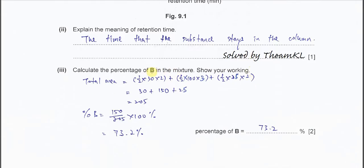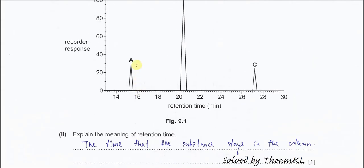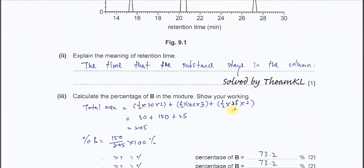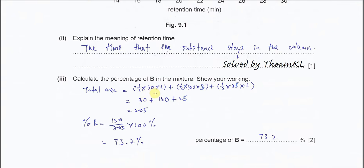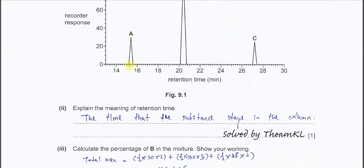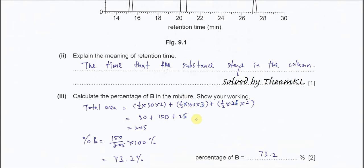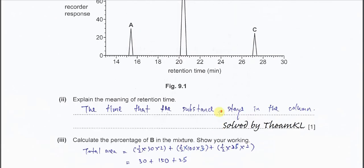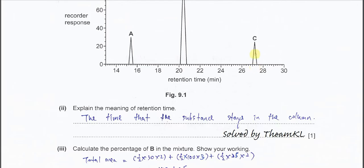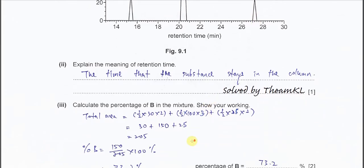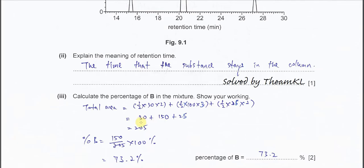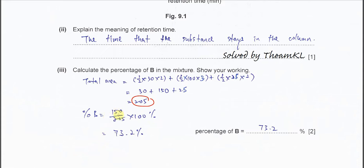Part 3: calculate the percentage of B in the mixture. First, calculate the total area. Area A = half times 30 times 2. The height for B is 100 and width about 3 minutes. For C, height is about 25 and width 2 minutes. Calculate each area accordingly — the total comes to around 205.